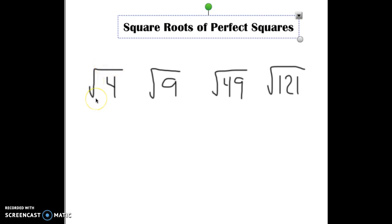Let's look at the square root of 4. What does that mean? What number times itself equals 4? And if you said 2, you're exactly right.